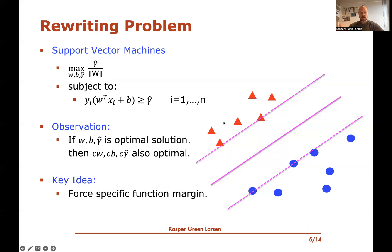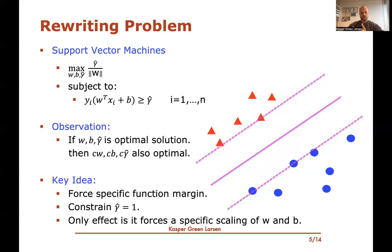The key idea to simplify this optimization problem is that we're going to force it to have a specific function margin. In particular, we're going to force the function margin to be exactly one. The optimal solution will just have a very concrete scaling of w and b. You will no longer have the property that upscaling all by factor c keeps it optimal — that will not be the case anymore.